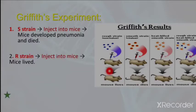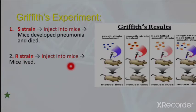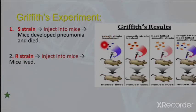Second, Griffith injected the R strain into the mice. Since R strain is non-virulent and non-harmful, when it was injected into the mice, the mice survived — they did not develop pneumonia.